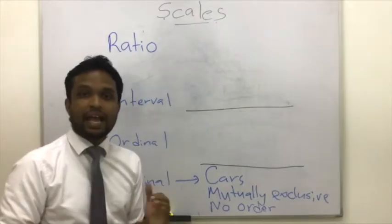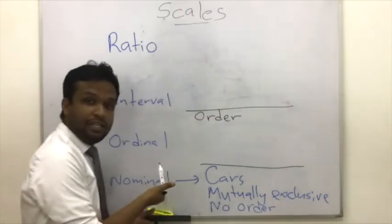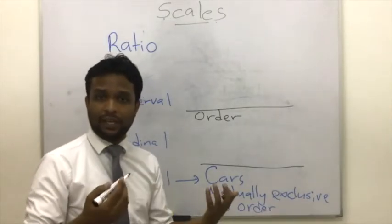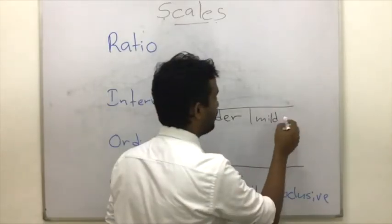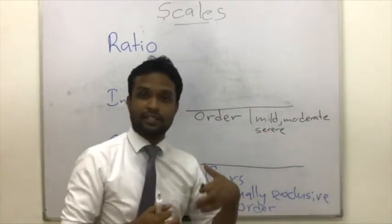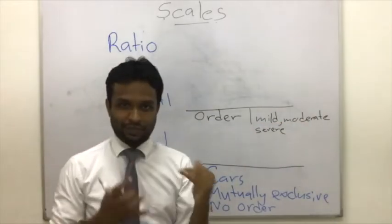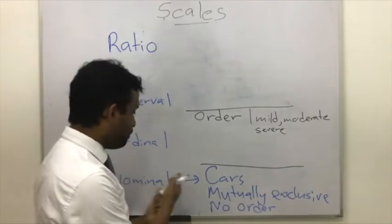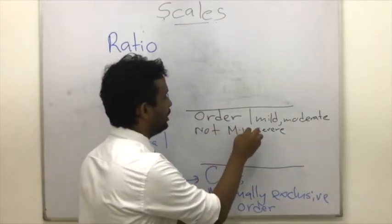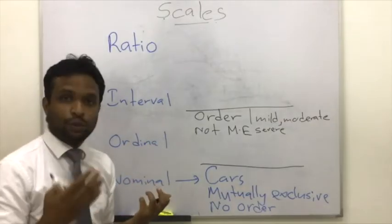What are ordinal variables? As the name implies, those values have order — unlike nominal, which has no order. Sometimes we classify values as mild, moderate, and severe. There is an order: severe is higher than moderate, and moderate is higher than mild. Because of that, ordinal values are not mutually exclusive — they are not independent of each other. Variables measured on ordinal scales are called ordinal variables.